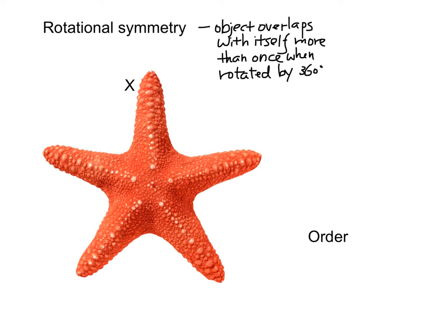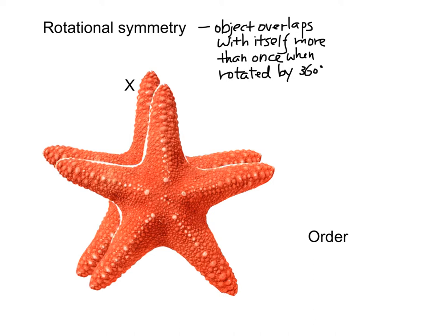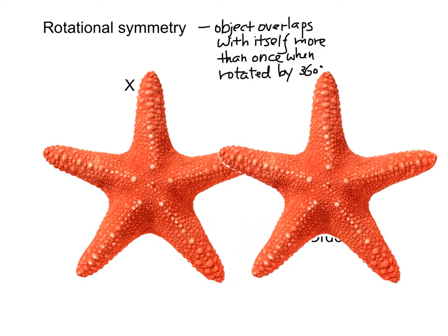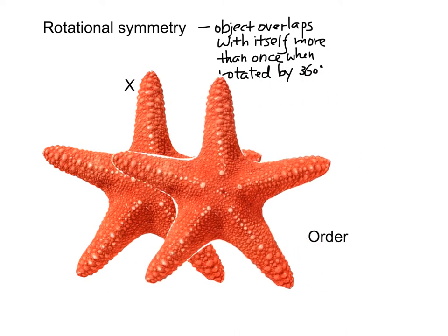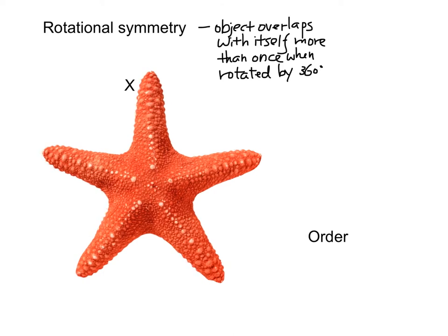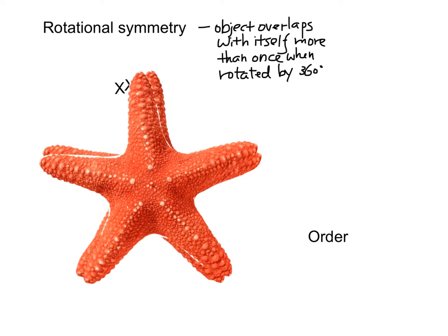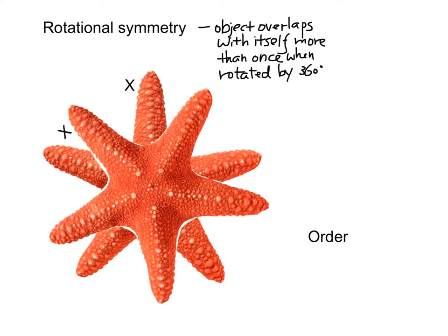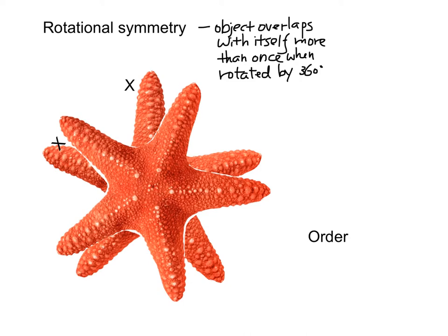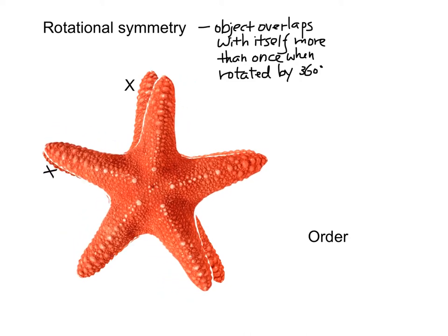I can make a copy or duplicate of the original starfish. This is the second one, and we can see that it can be overlapped with the first one. Now I'm going to rotate it to see how many times it will overlap with itself when it is rotated by 360 degrees.